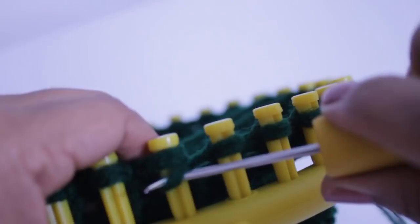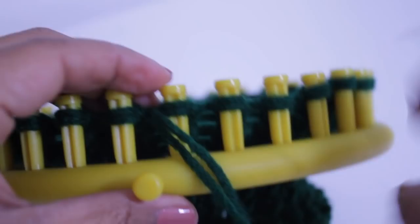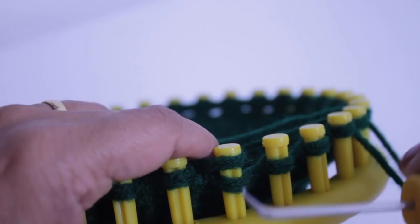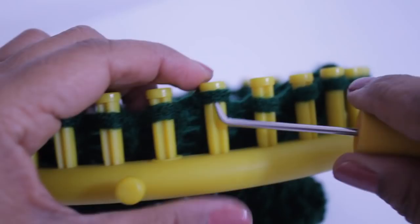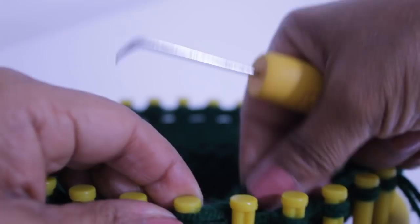We're gonna be using the basic bind off because it will leave the edge nice and clean. So you're gonna knit the first two pegs. This is gonna be worked over continuously for two pegs, but this one time, you're gonna knit both pegs. You're gonna take the loop off the second peg, peg two, move it to peg one. So you put it over the existing loop and you're going to knit off.